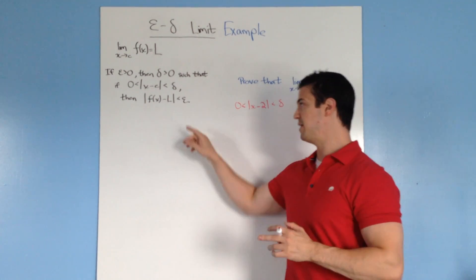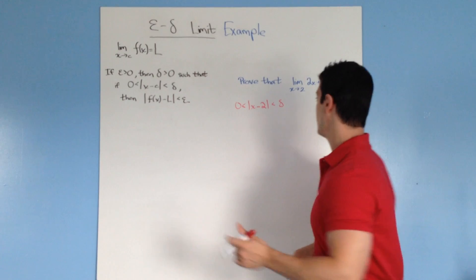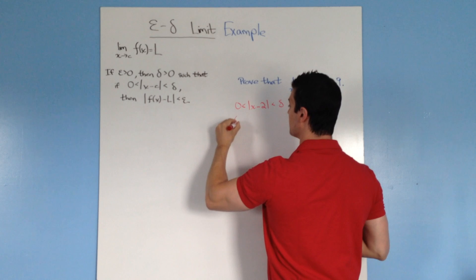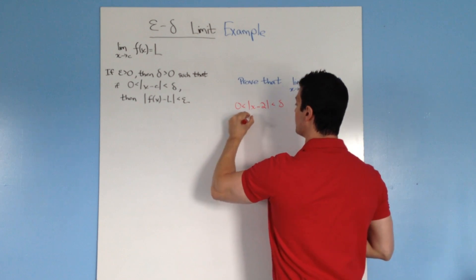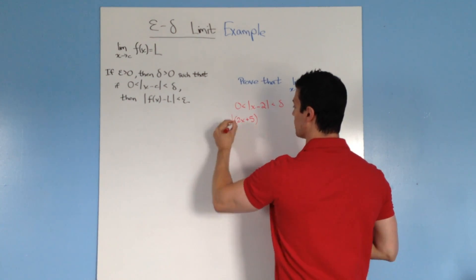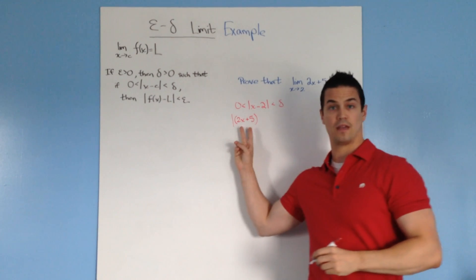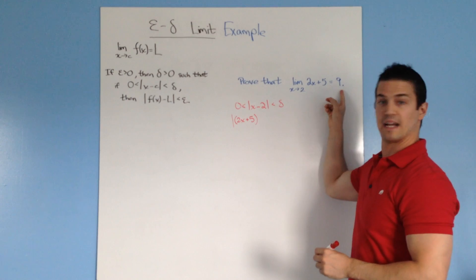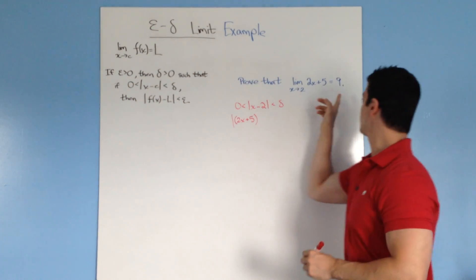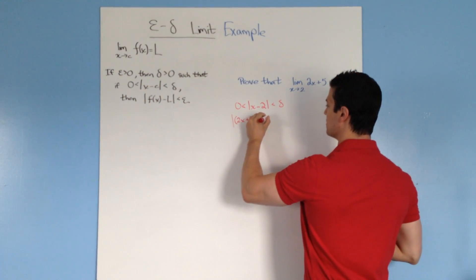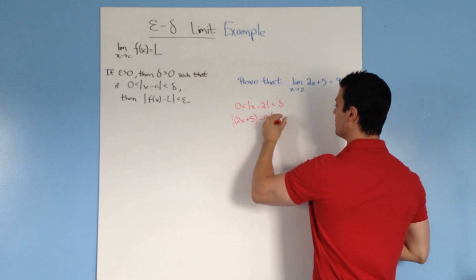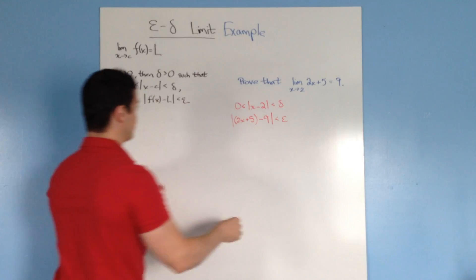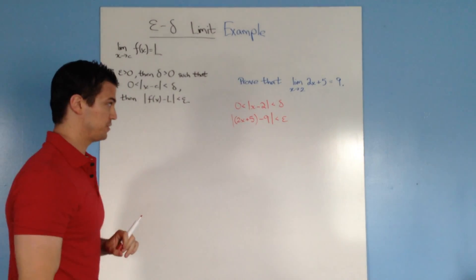Now we're going to do the same thing with our other inequality: the absolute value of f(x) minus L is less than epsilon. Instead of writing f(x), I'm going to write 2x plus 5 in parentheses to make my life easier. So f(x) minus L... well our L is 9, which matches our L over here. So I have the absolute value of 2x plus 5 minus 9 is less than epsilon. So far all I did was put our example into the terms of the definition.